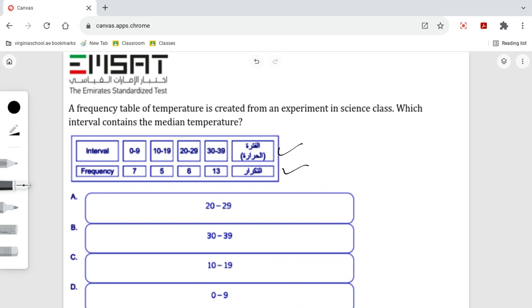10 to 19 is repeated five times, and so on. Now the question asks which interval contains the median temperature. While finding the median temperature, we need to add the frequency first. So 7 plus 5 plus 6 plus 13...